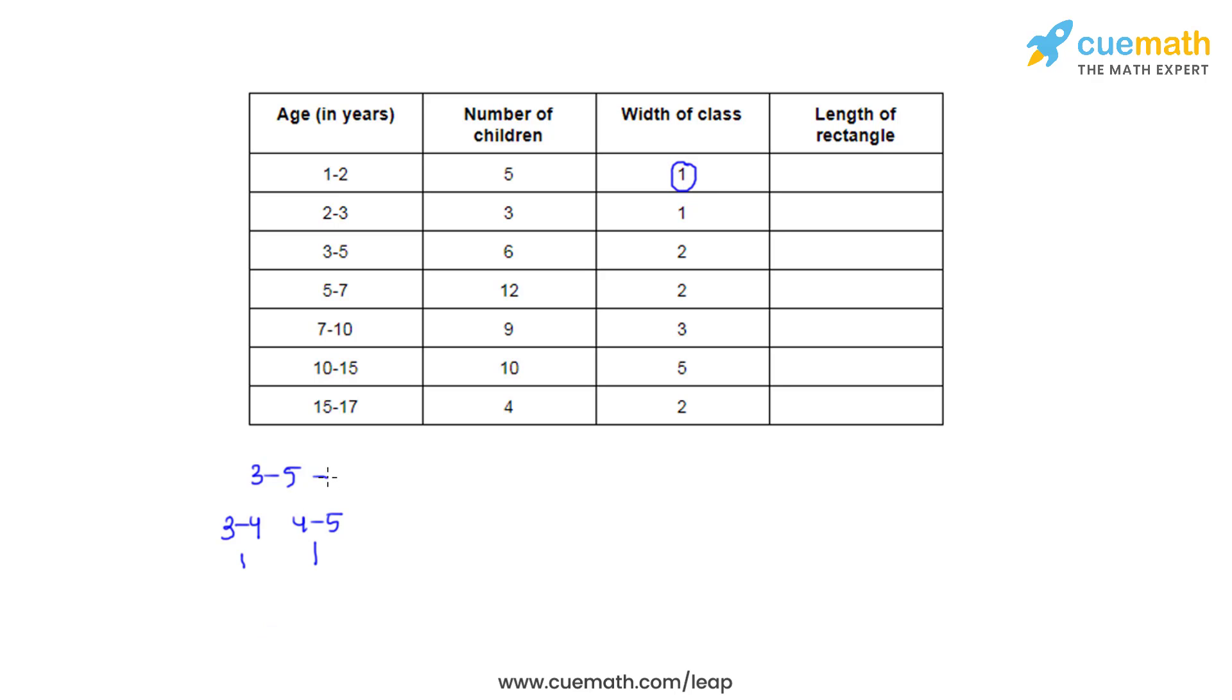In this we can make two subclass intervals, that is 3 to 4 and 4 to 5, each having a class width of 1. Now the frequency for the class interval 3 to 5 was 6, which must get equally divided to 3 to 4 and 4 to 5. So each class interval gets a frequency of 3. So this is how we do it.